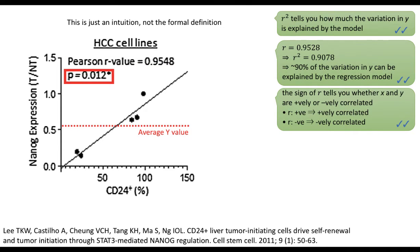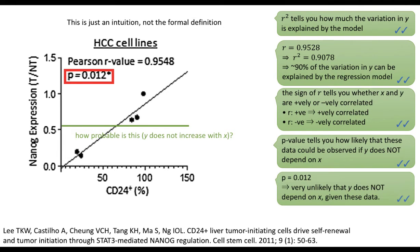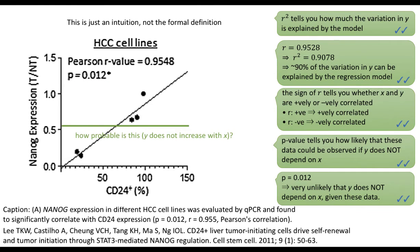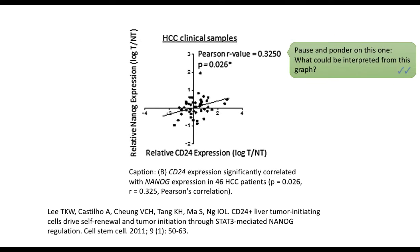Other than r-value, people are often interested in the p-value. The p-value tells you how likely you could observe this data if y does not depend on x. Basically, p-value tells you how probable this data could be observed if the real picture is a flat line. If you have a low enough p-value, typically 0.05 or smaller, we say that it is highly unlikely that y does not depend on x. Notice how they concluded that the x-values are significantly correlated with the y-value. I will let you make your own interpretations of the p-value and the r-value.